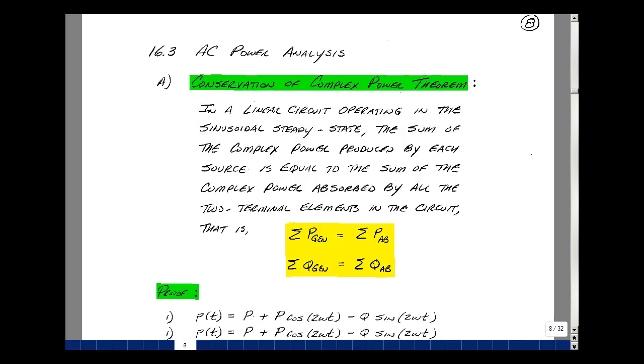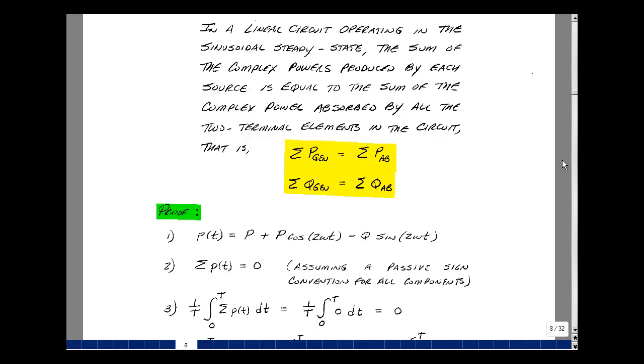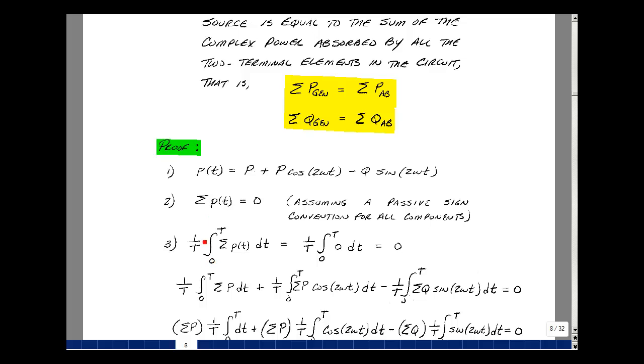Now, why would that be true? Well, we've proved similar things in the time domain, so let's go back to our time domain equation for instantaneous power, which is equal to P plus P cosine 2 omega t minus Q sine of 2 omega t. If we define all elements as absorbing power, then the sum of the instantaneous power is equal to zero. Let's integrate both sides of this equation,